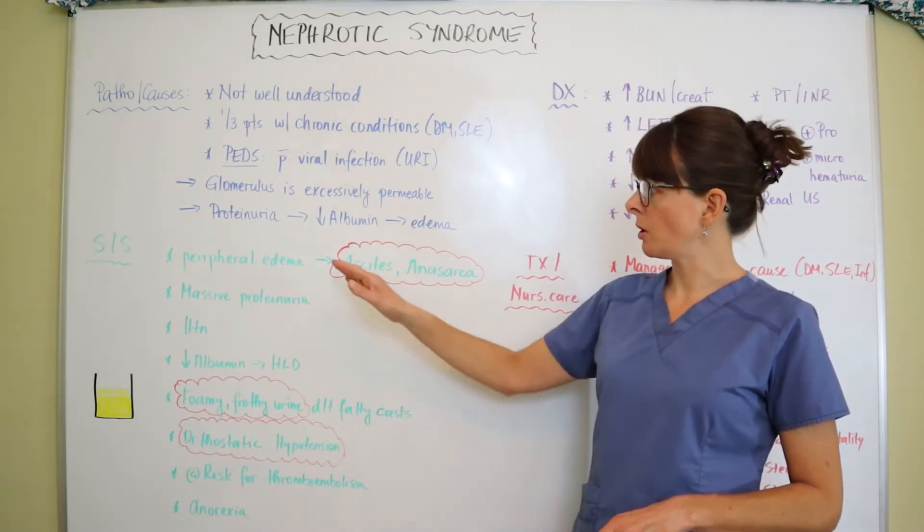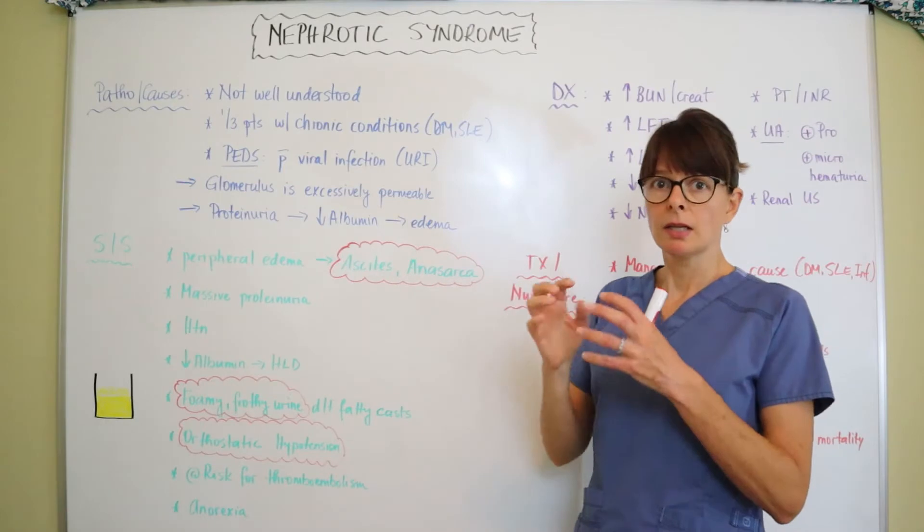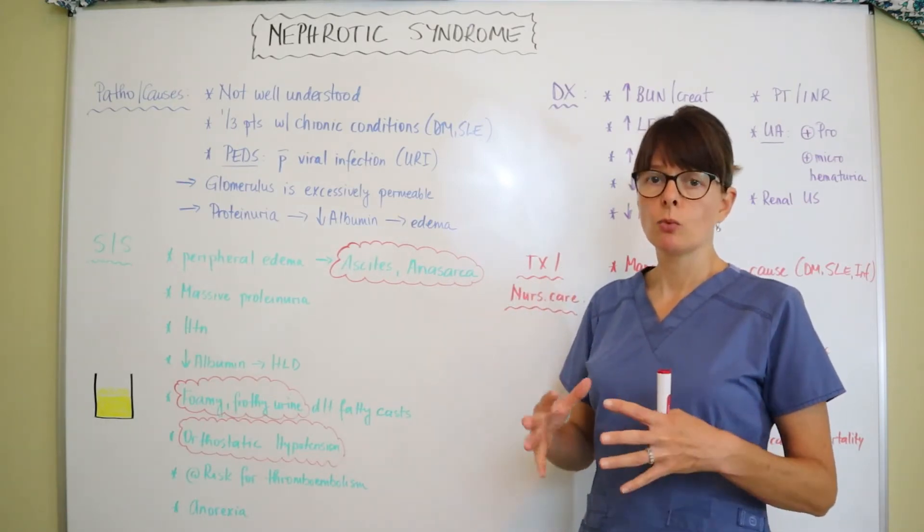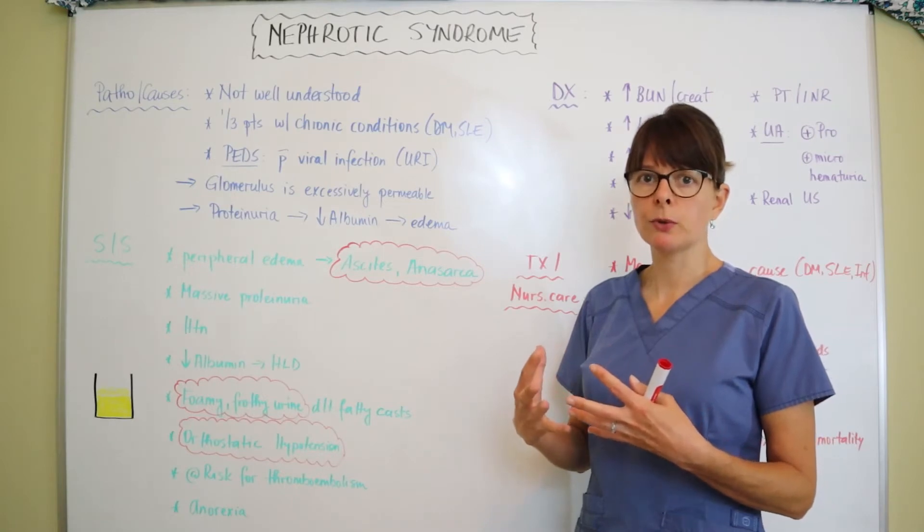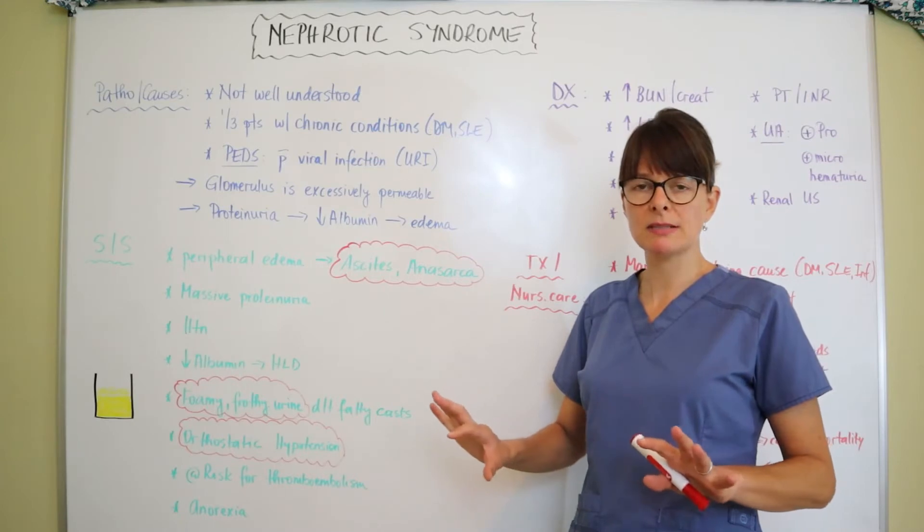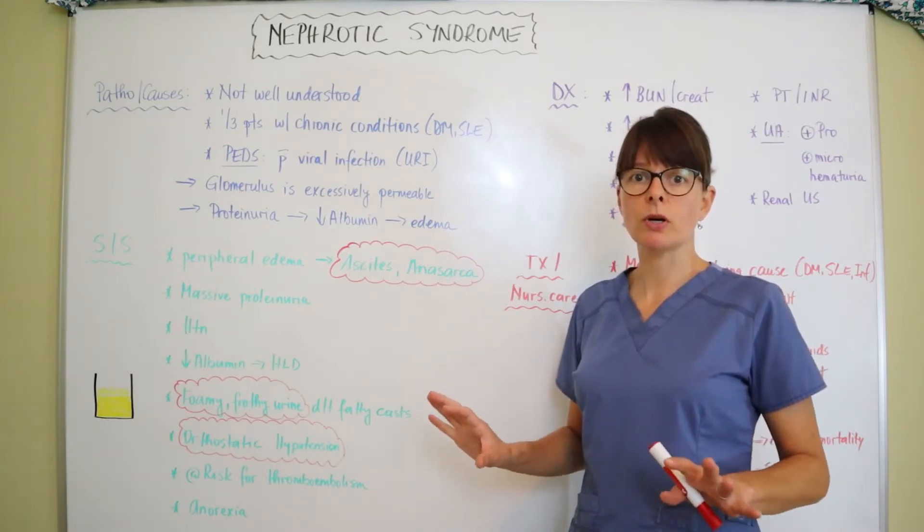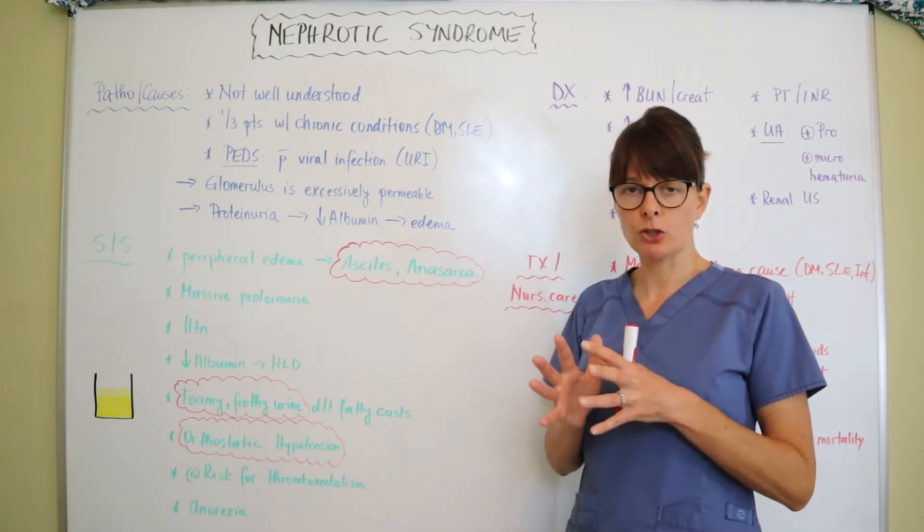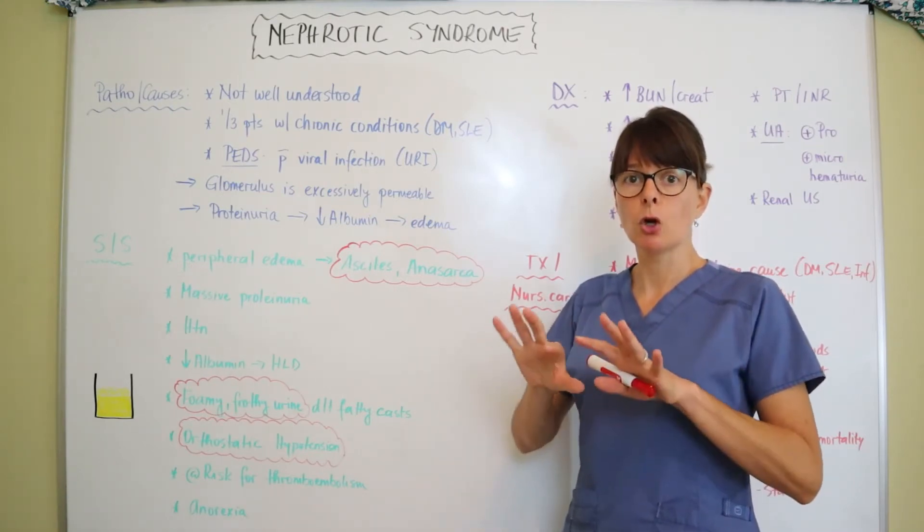All this loss of the protein causes the fluid to seep out of the intravascular space, which actually makes the patient have fluid volume excess, but it's not in the intravascular space. It's sitting in the third spaces where it doesn't belong. Intravascularly, there's actually fluid volume deficit.